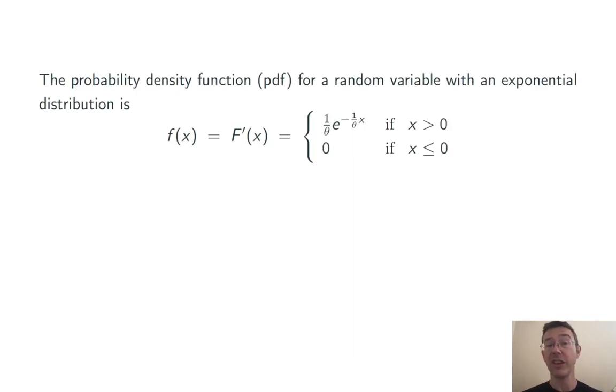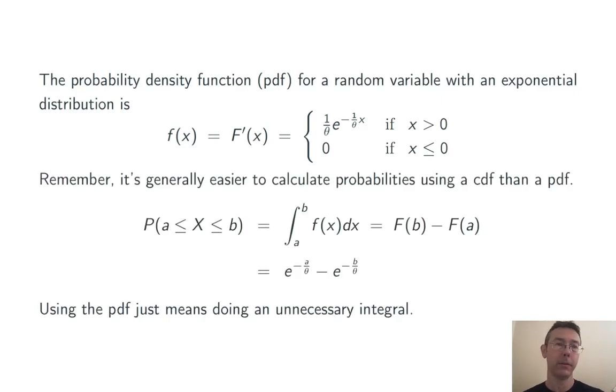If we differentiate this, we can get the PDF, the probability density function. It looks like this. For x greater than zero, it's 1 over theta e to the negative 1 over theta times x. But the PDF should not generally be used for computing probabilities. Generally, you want to use the CDF for that.